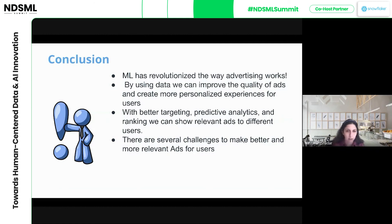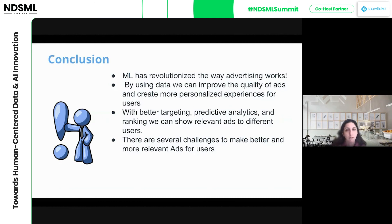To conclude, ML has revolutionized the way advertising works. Using historic data has made it possible to create relevant and personalized experiences for users, improving the quality of ads. Targeting, prediction, and ranking are key steps in the ads funnel that create relevant ads. However, there are several challenges — including time delays and real-time system issues — that we need to deal with continuously.